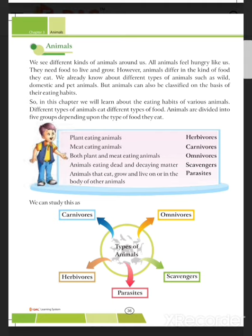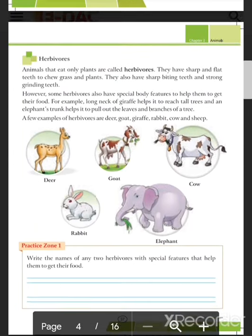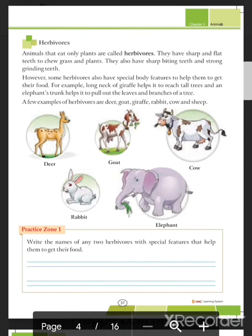Different animals eat different food — some animals eat dead and decaying matter, and some animals grow and live on the bodies of other animals. Animals that eat only plants are called herbivores.